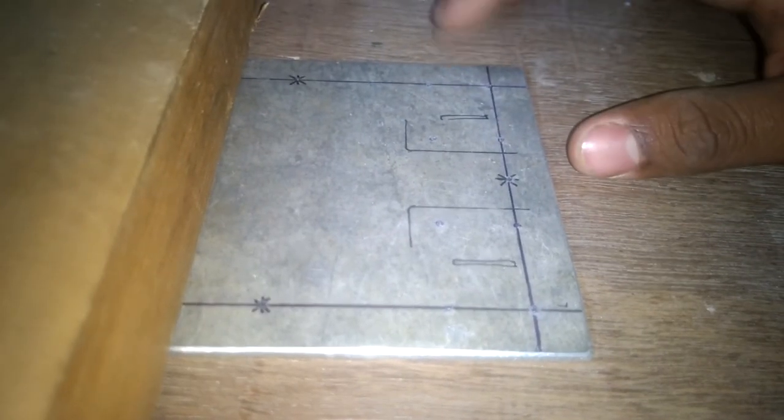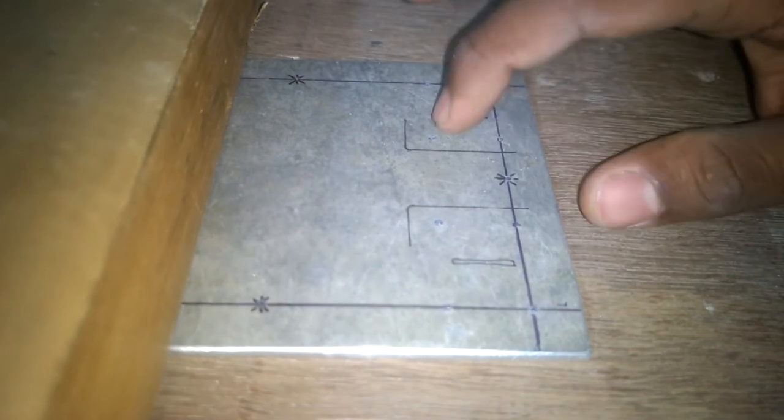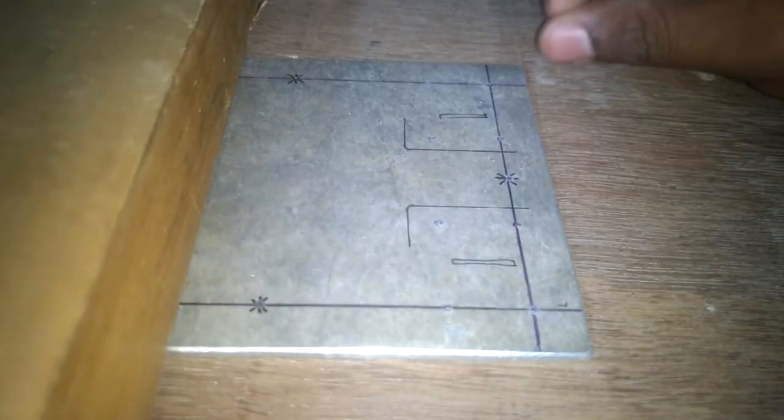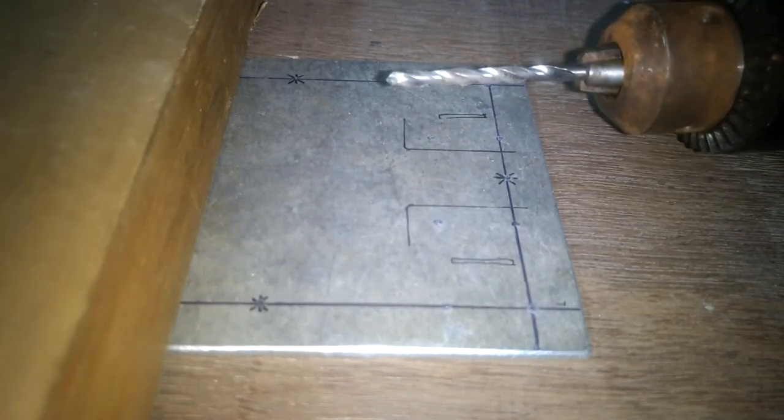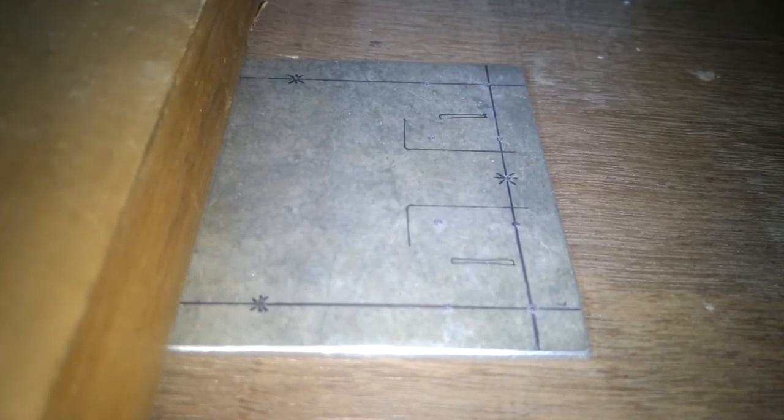You can see the plate is here, and I've punched it where I have to drill. I'm using a 4mm drill for that. I've already attached the drill bit with the drill, and I'm using a hand drill for this purpose. I'll now be drilling it.